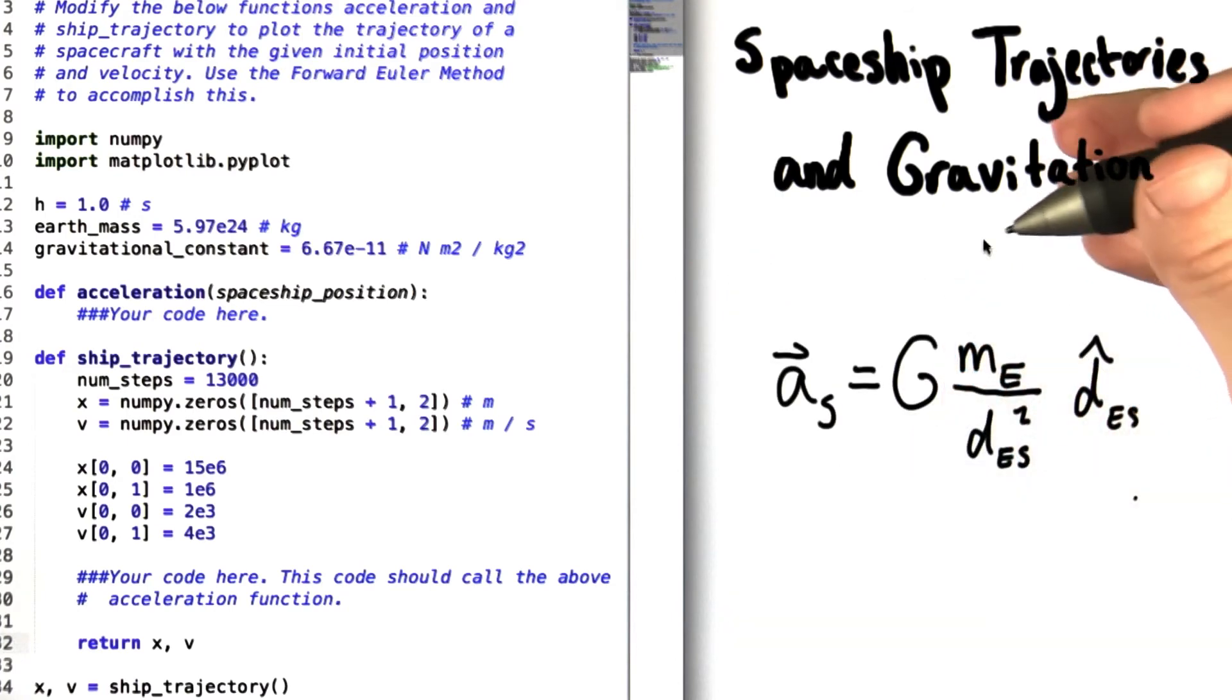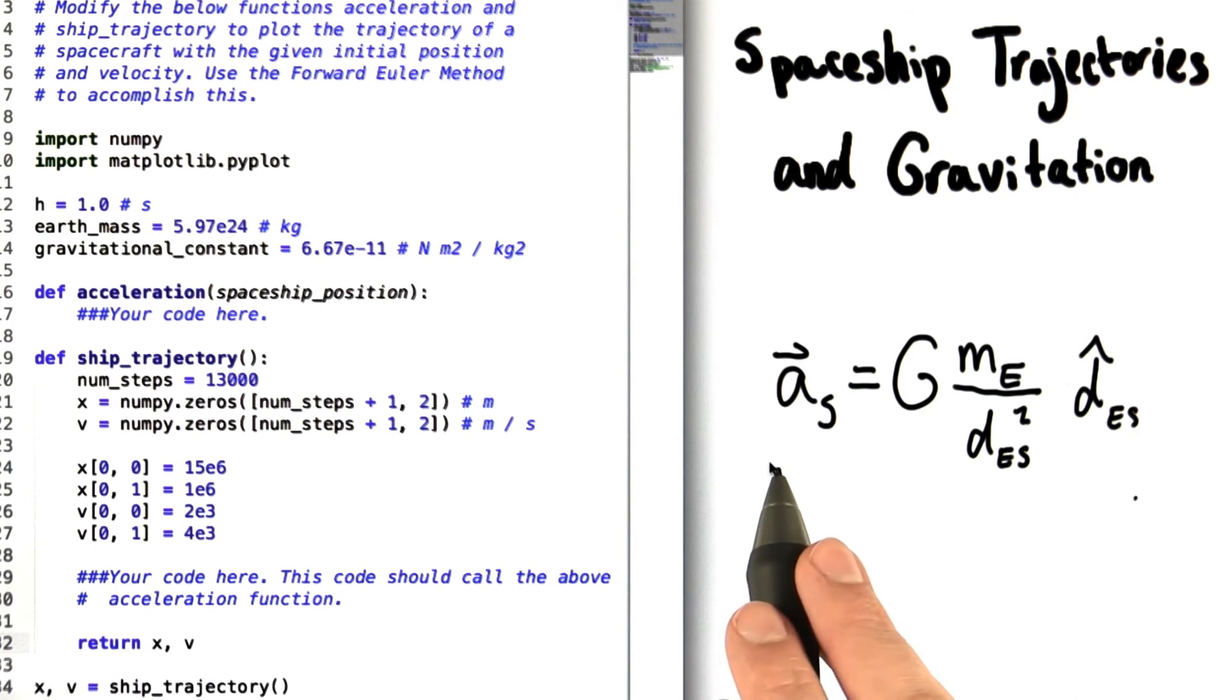This means, in the case we're considering, we can find the acceleration of the spaceship by taking the equation for force that we just wrote out and dividing by the mass of the spaceship, which leaves us with this expression.